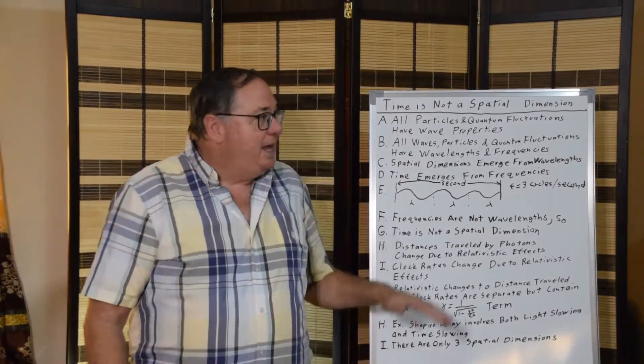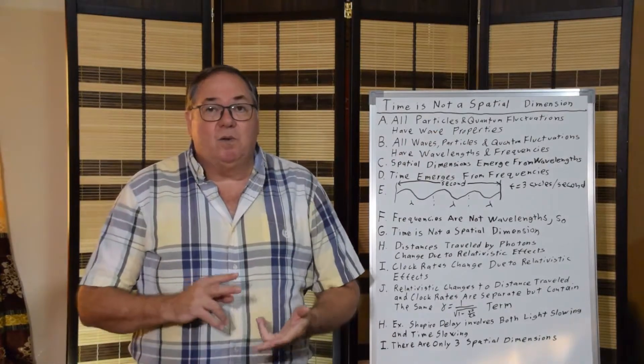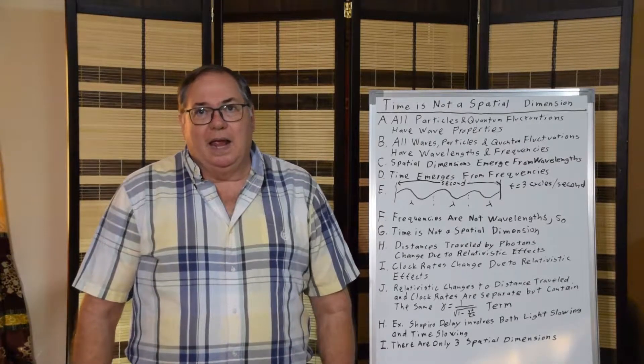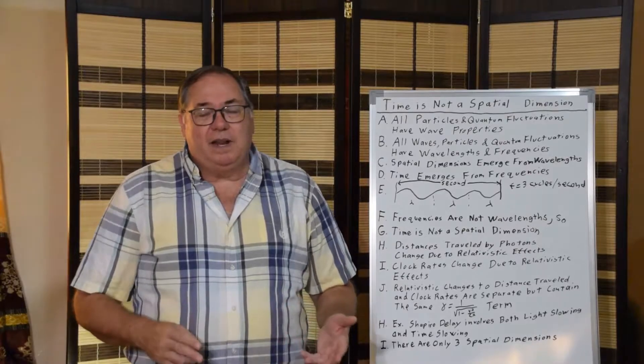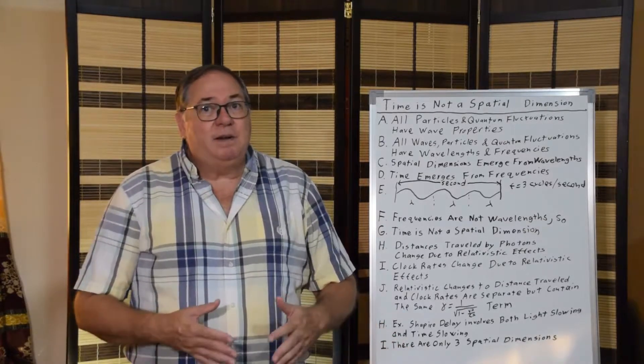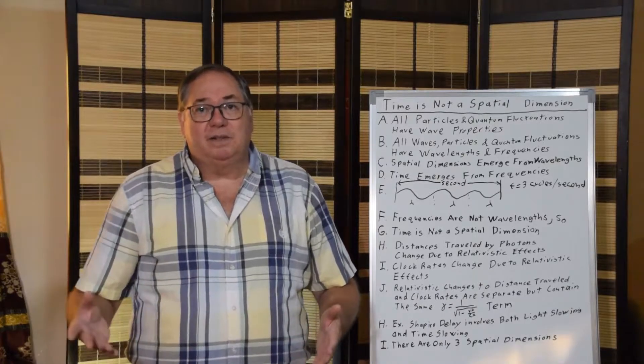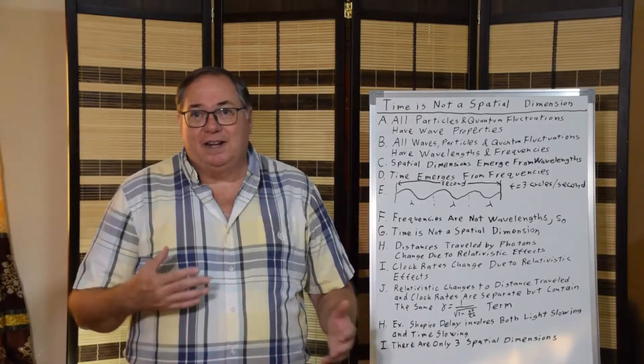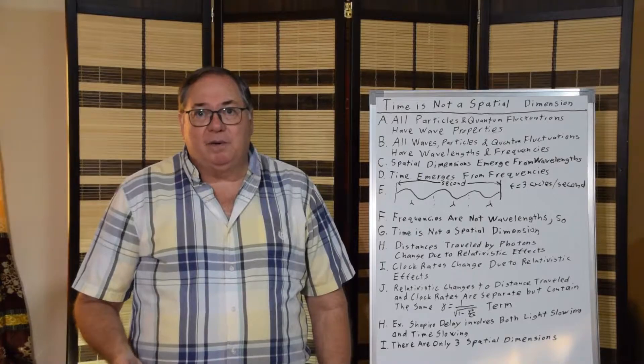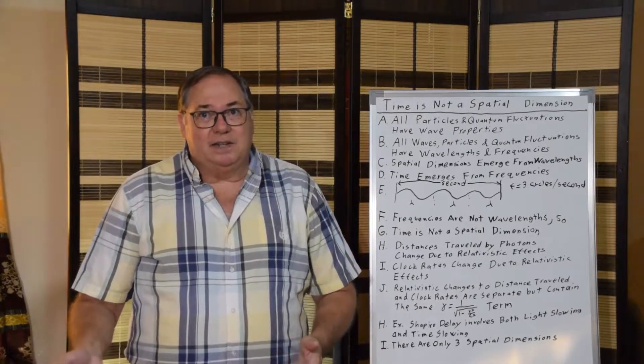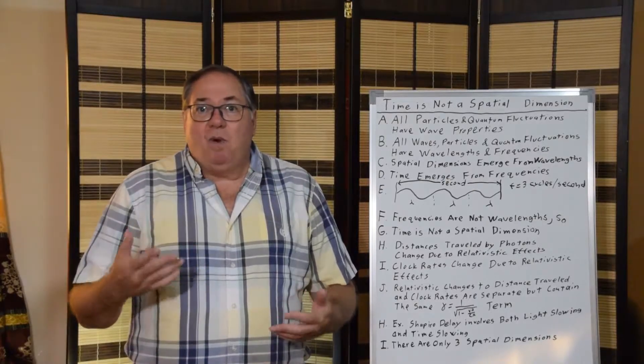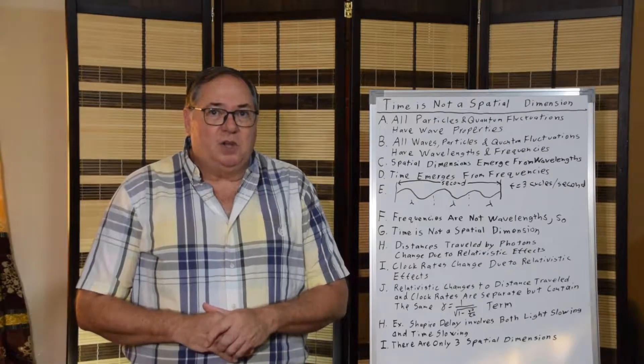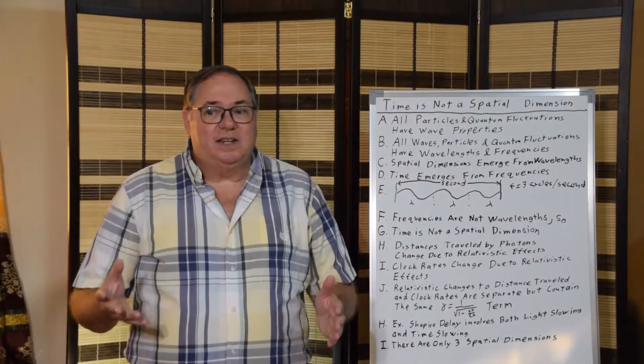To begin with, all particles and quantum fluctuations have wavelengths and frequencies. Louis de Broglie realized almost a hundred years ago that every particle has a wavelength and frequency associated with it. So electrons, protons, neutrons, everything else has wavelength and frequency. Photons obviously have wavelengths and frequencies, and quantum fluctuations also have wavelengths and frequencies. So everything that physically exists has wavelengths and frequencies.